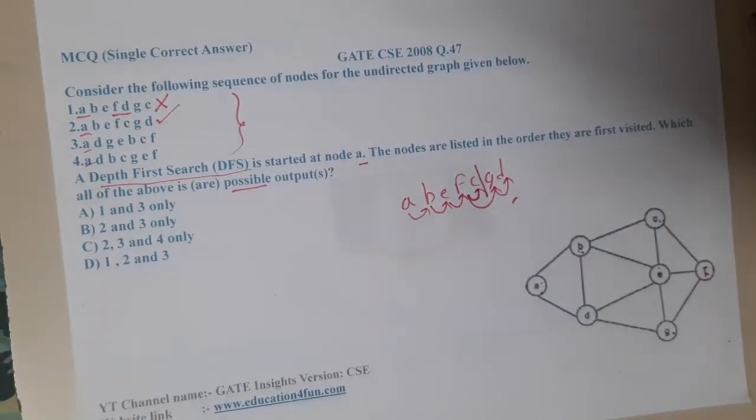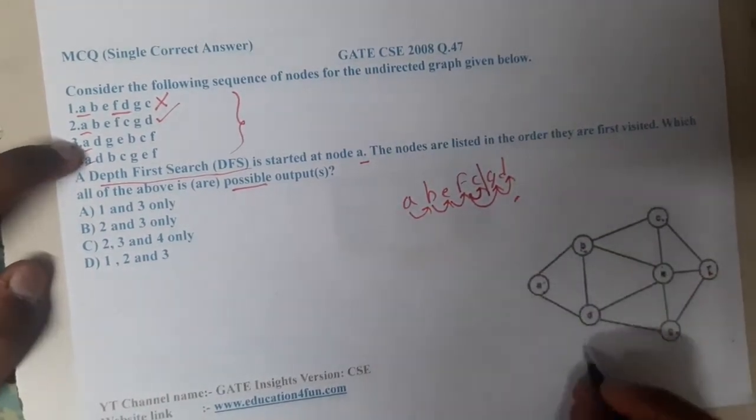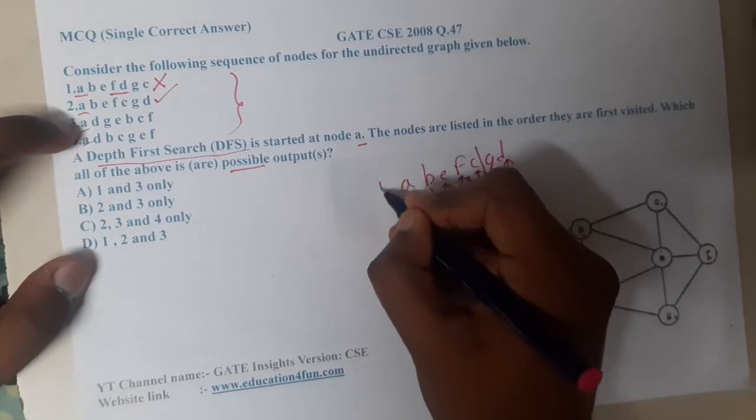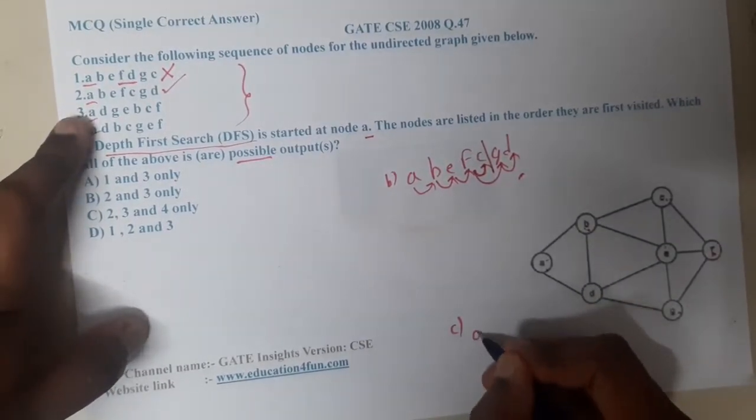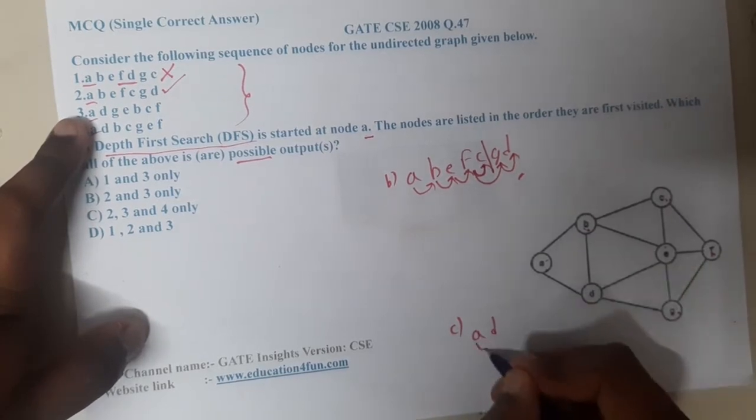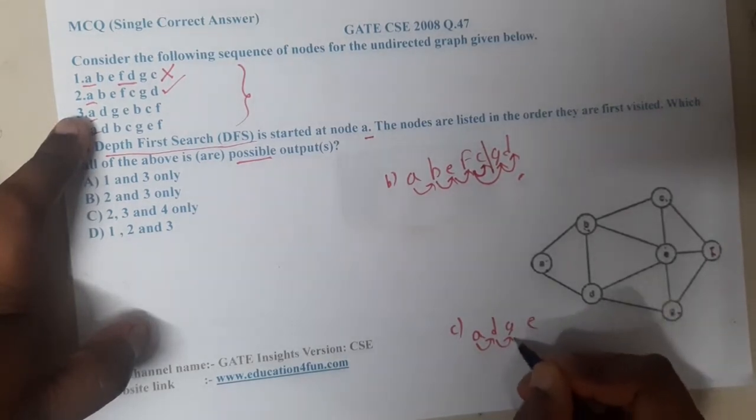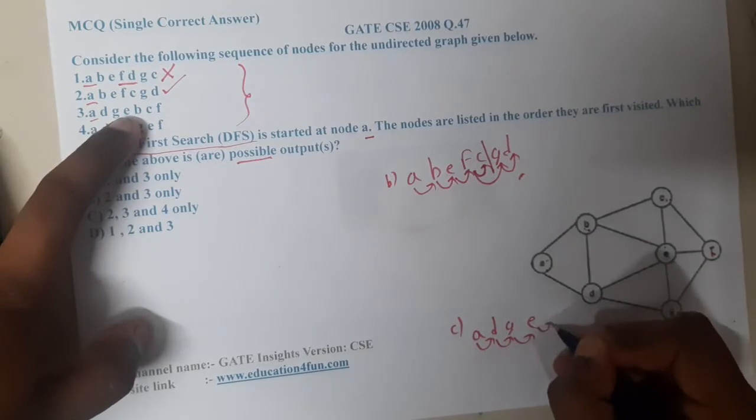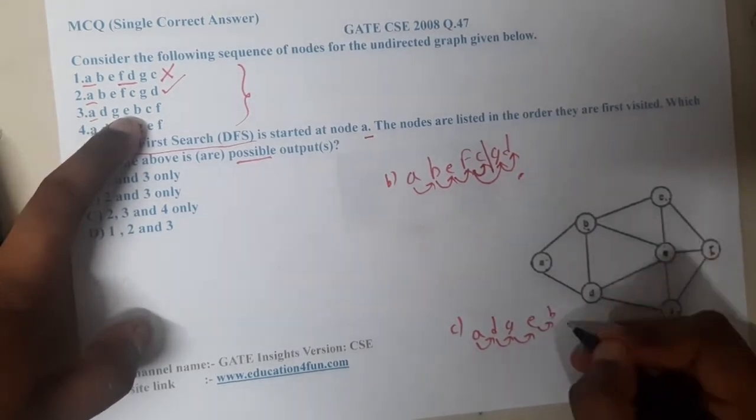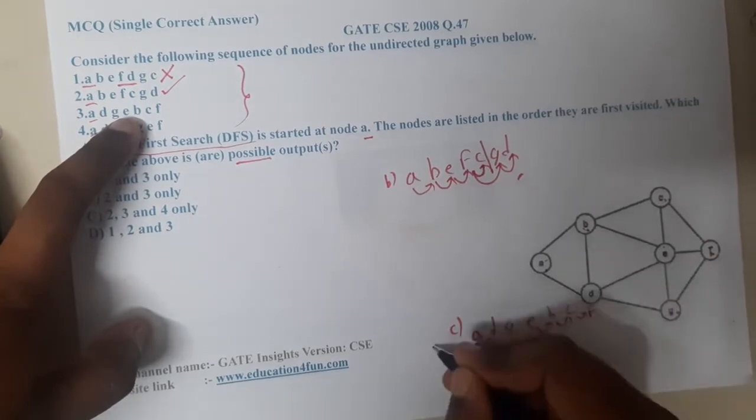So now b is satisfied. Let us solve in this way only because that gives you more idea, right? So I will be writing down here. This is for b and let us try for c now. From a I went to d, is there a path? Yes. From d I went to g, is there a path? Yes. From g I went to e, is there a path? Yes. From e I went to b, yes there is a path. From b I went to c, there is a path. From c I went to f, so there is a path. So basically c is also correct, right?